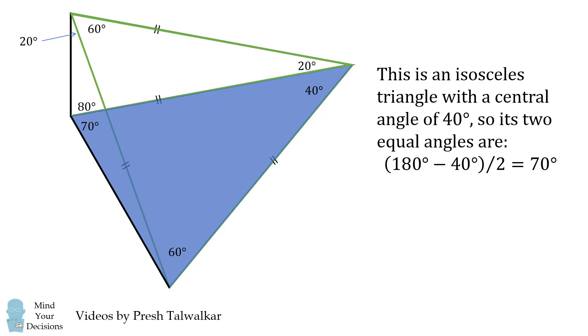So here we have a 70 degree angle and the other angle is also equal to 70 degrees. So if we remove 60 degrees from it, this will be equal to 10 degrees.